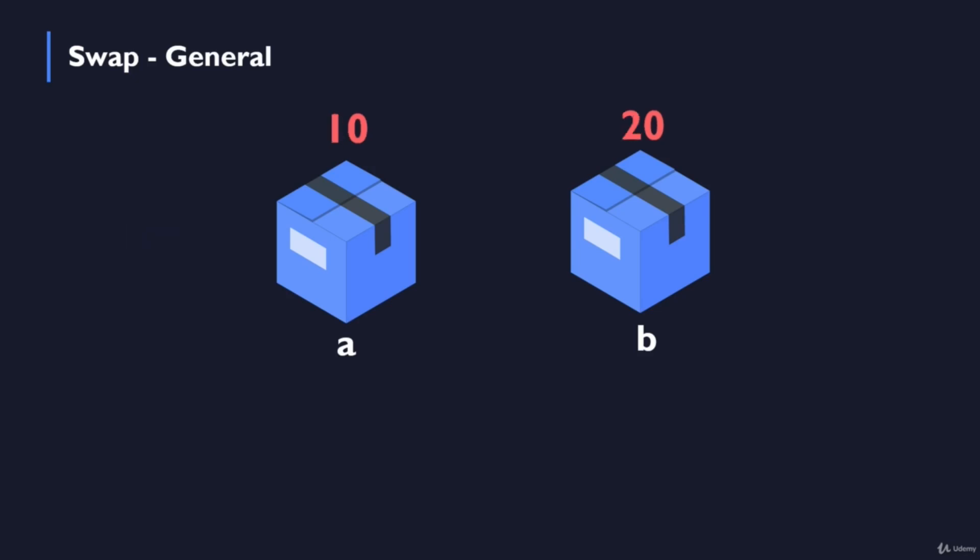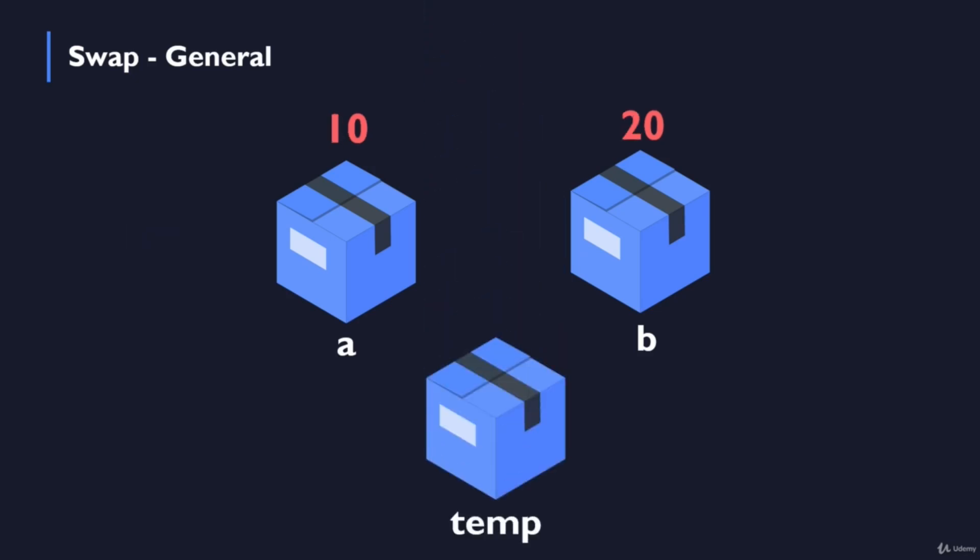What we want is probably to get another box and call this box temp, and this box will be used to assist in this exchanging process. So first of all we will take the value of box a, which is 10, and just put it inside of box temp. Then we will take the value of 20, all the shoes from box b, and put them inside of box a.